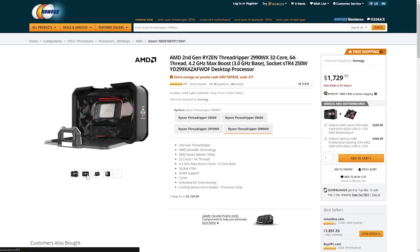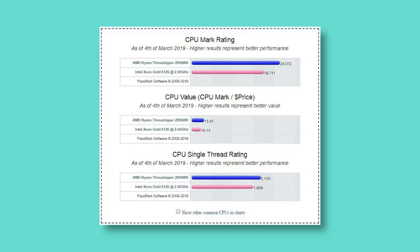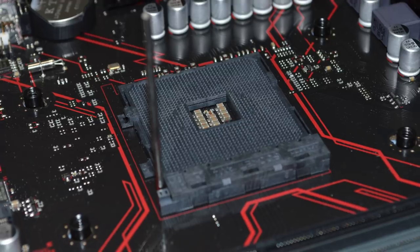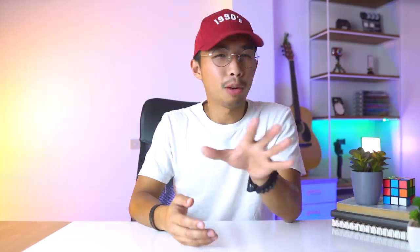Under the Pro category, I've narrowed it down to two CPUs, both priced at around $1,800. For Intel, we have the Xeon Gold 6126, and for AMD, the Ryzen Threadripper 2990WX. The Threadripper is a bit better at both overall and single-thread benchmarks, so it's a no-brainer which to pick. Keep in mind that motherboard compatibility for these processors is uncommon — most stores don't carry boards with STR4 or LGA3647 sockets. So before purchasing, make sure compatible motherboards are available and within your budget.